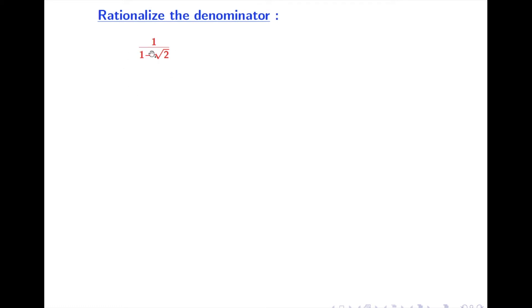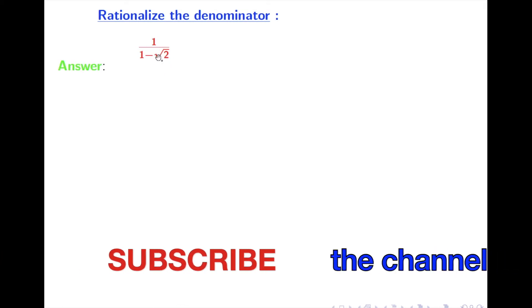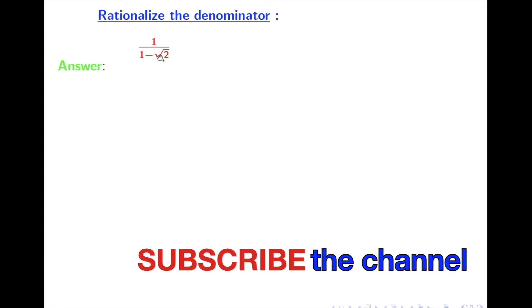Here we have taken 1 by 1 minus root 2 as an example. Now look that in our denominator we have 1 minus root 2. Here root 2 is an irrational number, that's why the denominator is an irrational number.